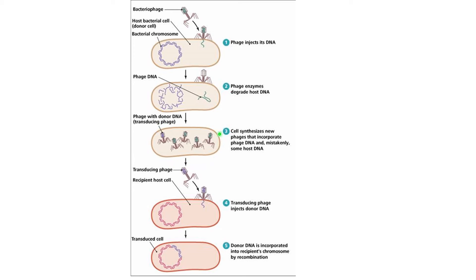Then this donor bacterium lyses and bursts open, and the progeny phages are released. This transducing phage is then going to find a new host cell, in this case the recipient bacterium, and inject the donor bacterium DNA into it.